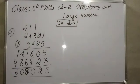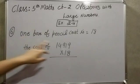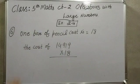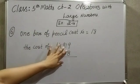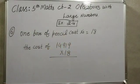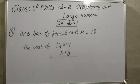Next, the 4th and 5th sums are as they are. We go to the 6th sum. The statement says: 1 box of pencils costs 18 rupees, and what is the cost of 14,919 boxes? So we will multiply 18 by 14,919.